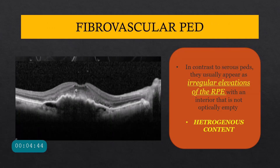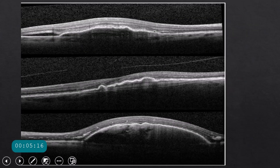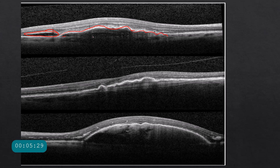In a fibrovascular PED, in contrast to the serous PED with its optically empty dome-shaped zone, you will see an irregular elevation of the RPE. The zone is not homogeneous nor optically empty — there are heterogeneous areas with hyper- and hyporeflectivity. The fibrovascular PED can also be associated with CNVM, and you may see subretinal fluid with heterogeneous density in the sub-RPE zone. Some hyperreflective areas interspersed with areas of bleed represent the vascular regions.